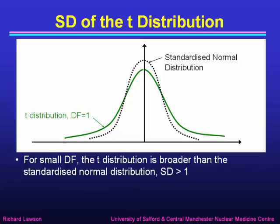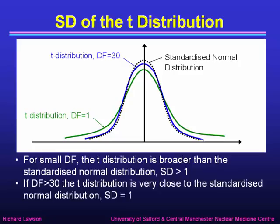Here's a graph of the t-distribution, shown as a solid green line for one degree of freedom, compared with the dashed curve, which is the standardized normal distribution. You can see that for small degrees of freedom like this, the t-distribution is broader than the standardized normal distribution — it's got a standard deviation greater than one, with more measurements out in the tails than the normal distribution would predict. But if the number of degrees of freedom is large, we see in blue the t-distribution for 30 degrees of freedom, which is very close to the standardized normal distribution and hence has a standard deviation equal to one.